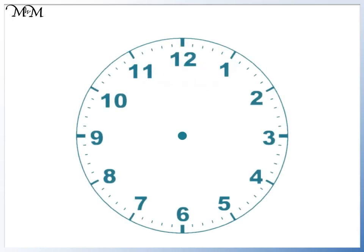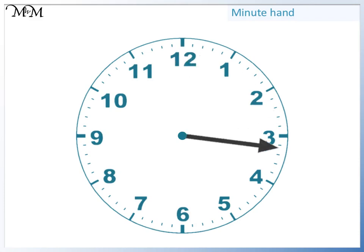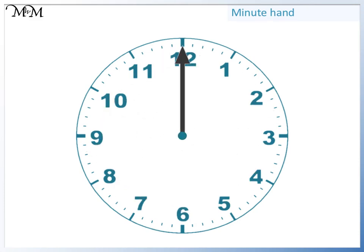Here we have a clock. It has numbers going from 1 to 12. This is known as the minute hand. It tells us how many minutes have passed. When it completes one full turn, one whole hour has passed.